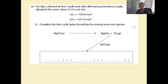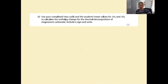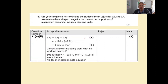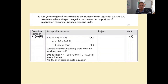Complete the Hess cycle: you added magnesium carbonate to acid and ended up with MgCl₂(aq) + H₂O(l) + CO₂(g). Don't forget state symbols; it's good practice to include + 2HCl on each arrow. Use the completed Hess cycle to calculate the enthalpy change: going down ΔH₂ and up against ΔH₃, so ΔH₁ = ΔH₂ − ΔH₃ = −126 − (−231). One mark for setting up the equation, one mark for the correct answer: plus 105 kJ/mol.